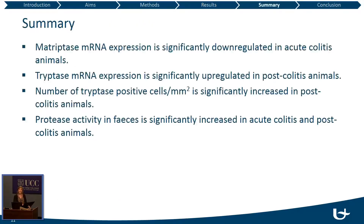To summarize: matriptase mRNA expression was significantly down-regulated in the acute colitis animals, and tryptase mRNA expression was significantly up-regulated in the post-colitis animals. The number of tryptase-positive cells per square millimeter was significantly increased in the post-colitis animals. Protease activity in the feces was significantly increased both in the acute colitis and post-colitis animals.